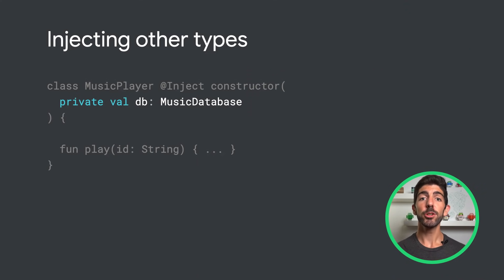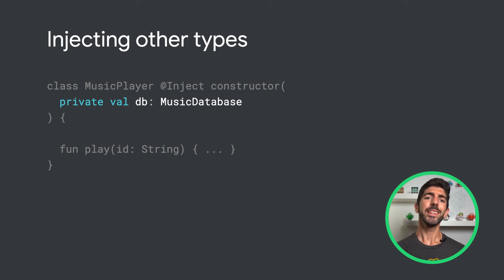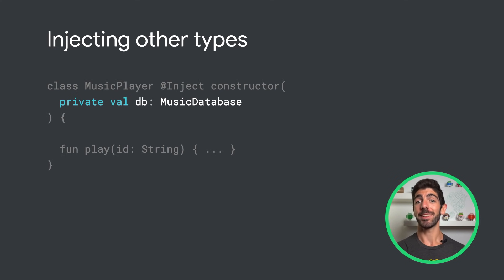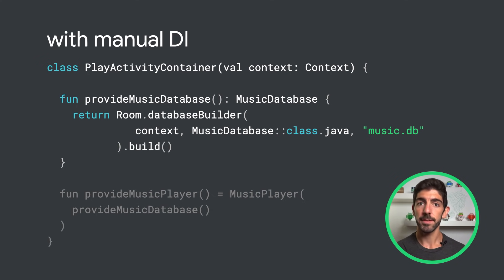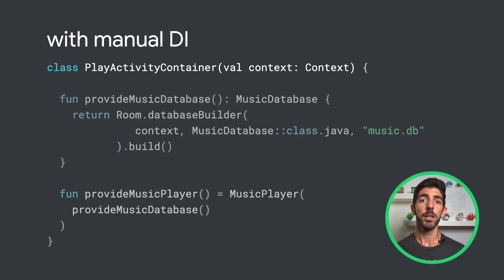Now let's complicate the example. MusicPlayer now takes a dependency in its constructor: MusicDatabase. Therefore, we need to tell Hilt how to provide instances of MusicDatabase. When the type is an interface, or you don't own the class because it comes from a library, you cannot annotate its constructor with @Inject. Let's imagine we are using Room as the persistence library in our app. When providing MusicDatabase — which with Room would be an abstract class — we would like to run some code when providing the dependency. Then, when providing an instance of MusicPlayer, we need to call the method that provides or satisfies the MusicDatabase dependency.